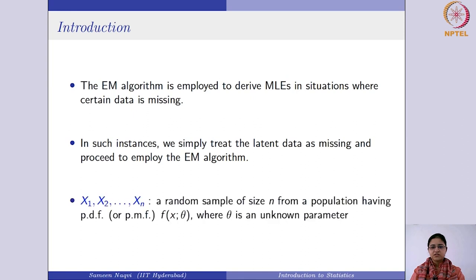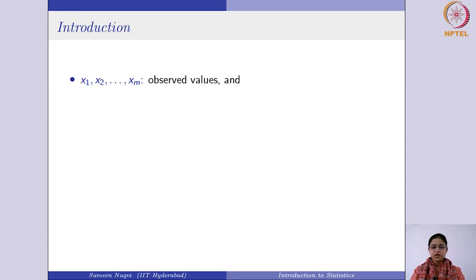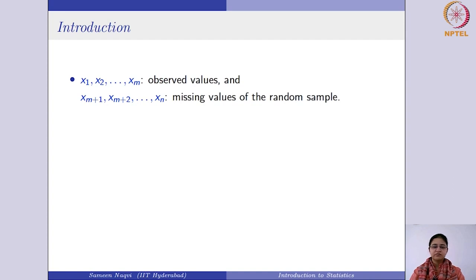However, when you are dealing with a huge amount of data, you might come across situations where certain observations are missing. In that case, you cannot simply apply the original method of maximum likelihood estimation. For that, we have the EM algorithm, which is mainly used whenever you have missing data or missing observations in your dataset. Let us consider a random sample of size n from a population whose PMF is given to us: x1, x2, ..., xn.